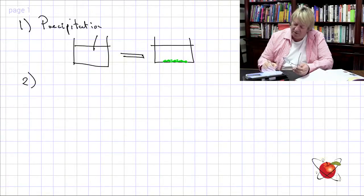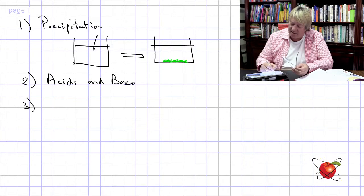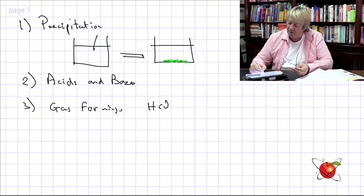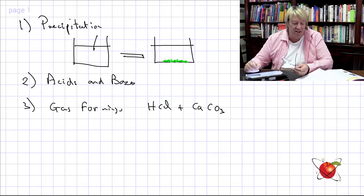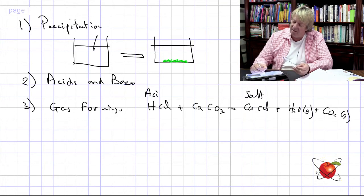We've got precipitation, then we've got acids and bases. Section three: gas-forming reactions. Very specifically, if we do CaCO₃ plus an acid, we end up with calcium chloride salt plus H₂O plus CO₂ gas. We're putting an acid plus a carbonate and getting salt, water, and CO₂ — that's one of the reactions we have to know.